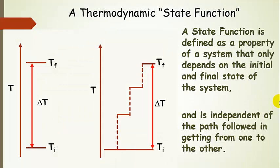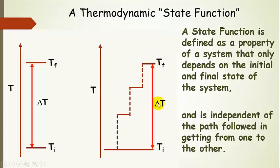A state function is a property of a system that depends only on the initial and final state — that's it. Delta T, change in temperature, is another one. Here's our initial temperature and our final temperature. Delta T is the same regardless of whether we go in one direct step, as shown in this graph, or whether we go up to some temperature, hang out there for a while, then go up again, hang out, and finally reach our final temperature. The change in temperature is the same; it doesn't matter if we took the direct path or the all-around Robin Hood's barn path.